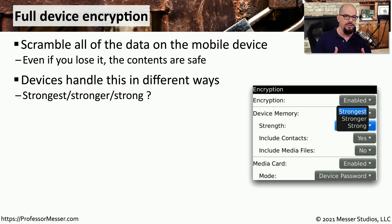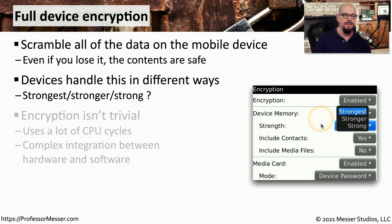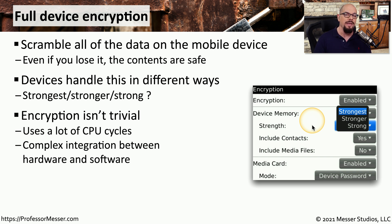Some mobile devices give you options for how to implement full device encryption — for example, a strongest, stronger, or strong setting. There may be trade-offs regarding the amount of CPU, battery, and time it takes to store and retrieve encrypted information. Some encryption methods can use quite a bit of CPU cycles, which also means greater battery consumption. By having these options available, we can customize how strong the encryption is and balance that with how much battery life we'd like from the device.